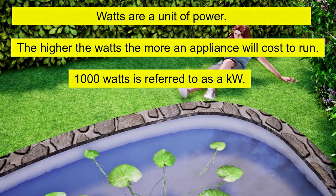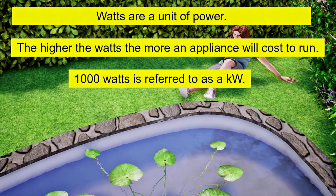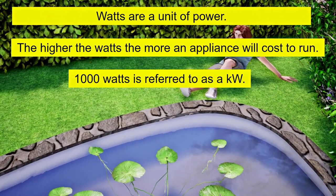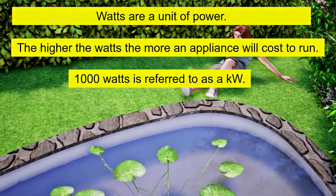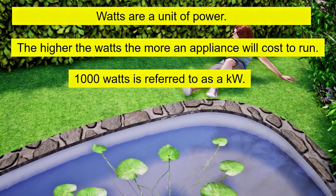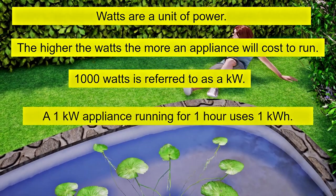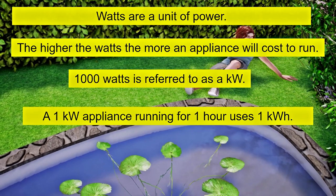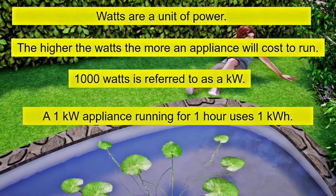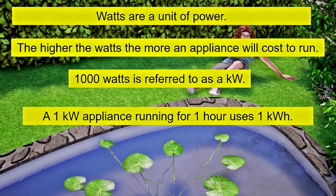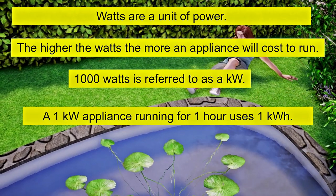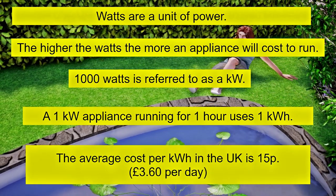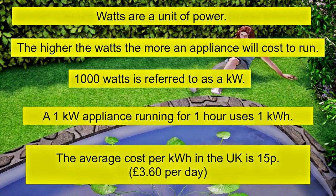1000 watts is referred to as a kilowatt. If you run an appliance that is one kilowatt for one hour, you have used one kilowatt hour of electricity. In the UK the average cost per kilowatt hour is 15p, or £3.60 per day.